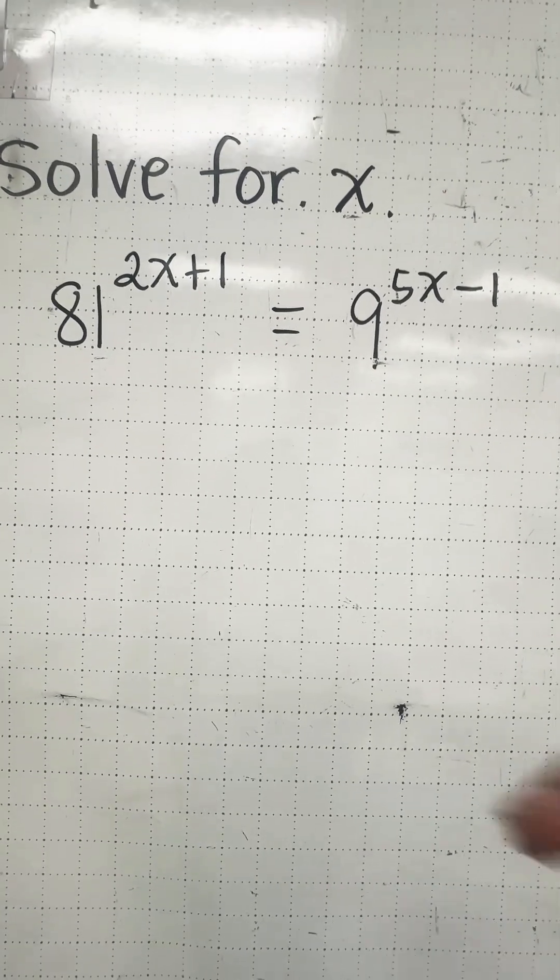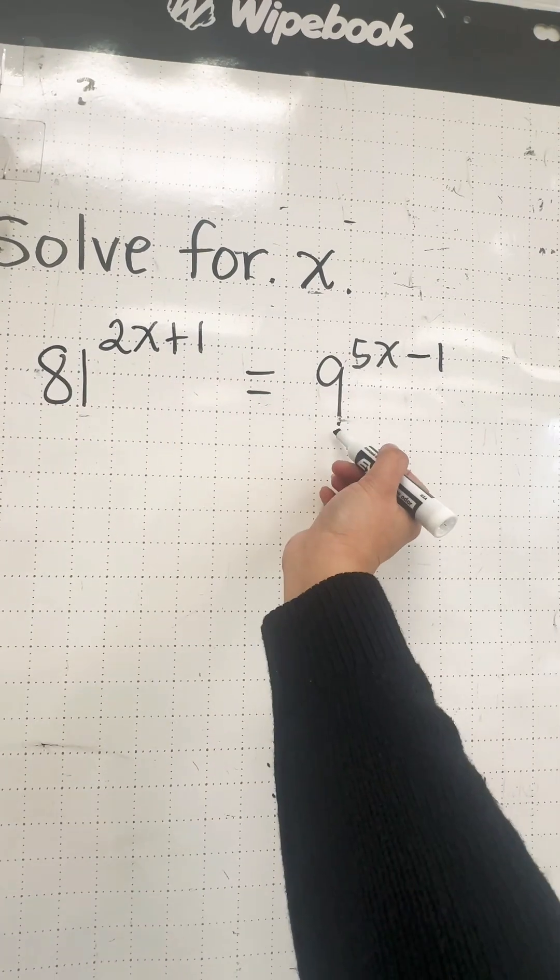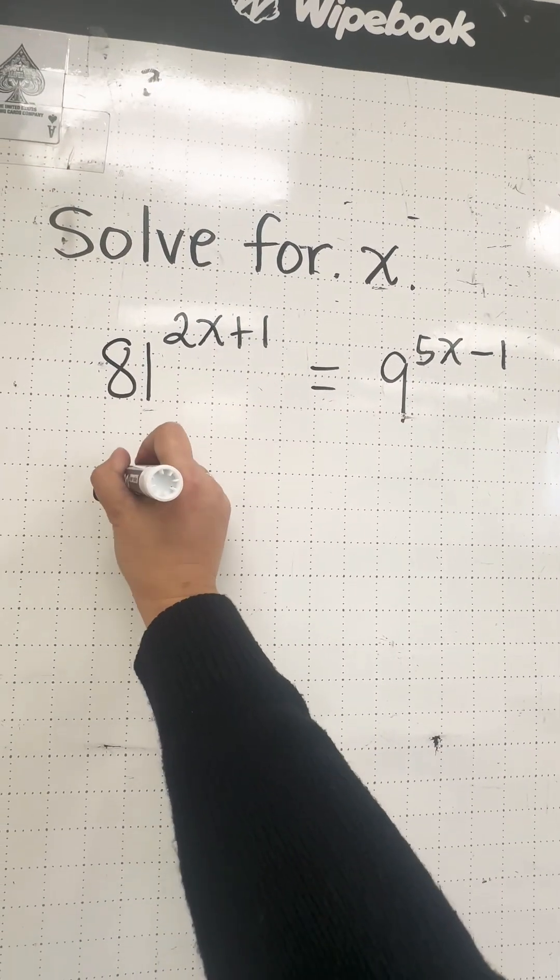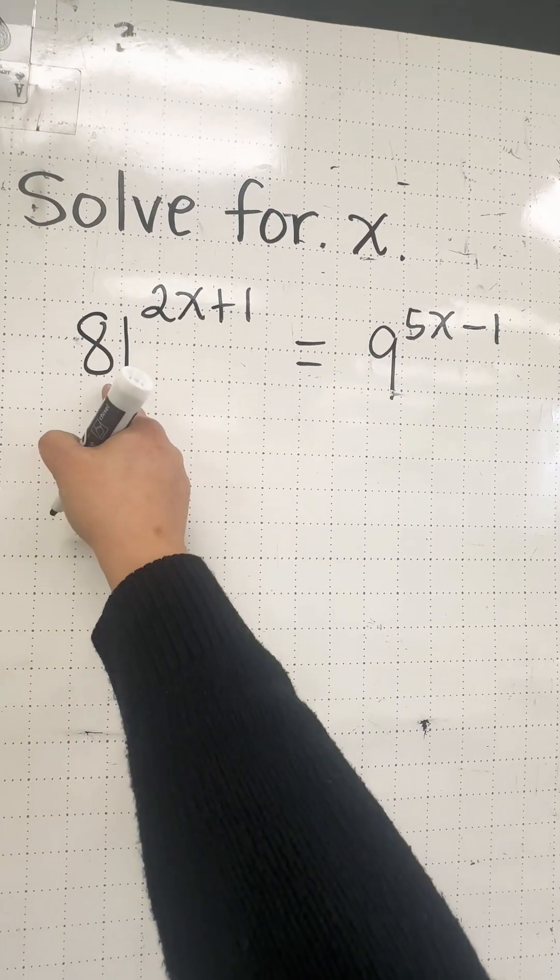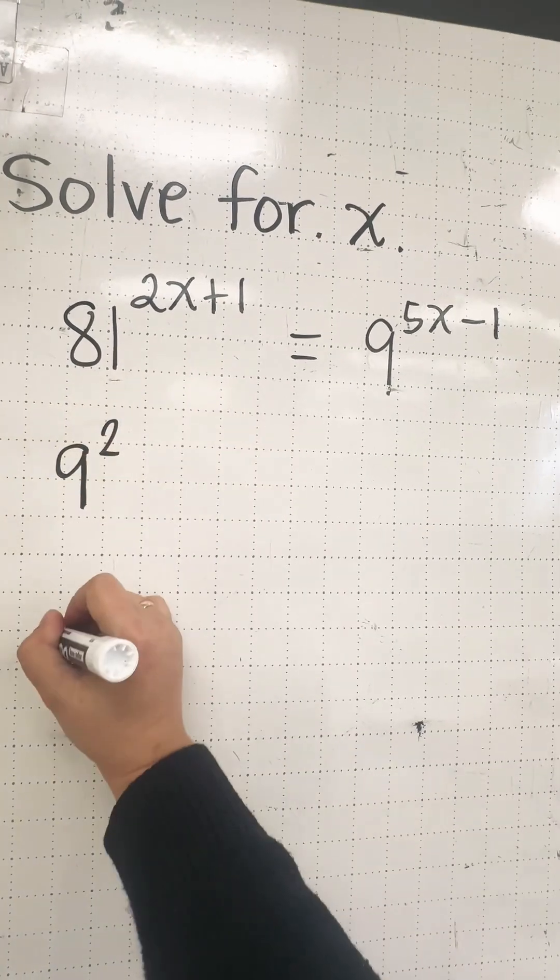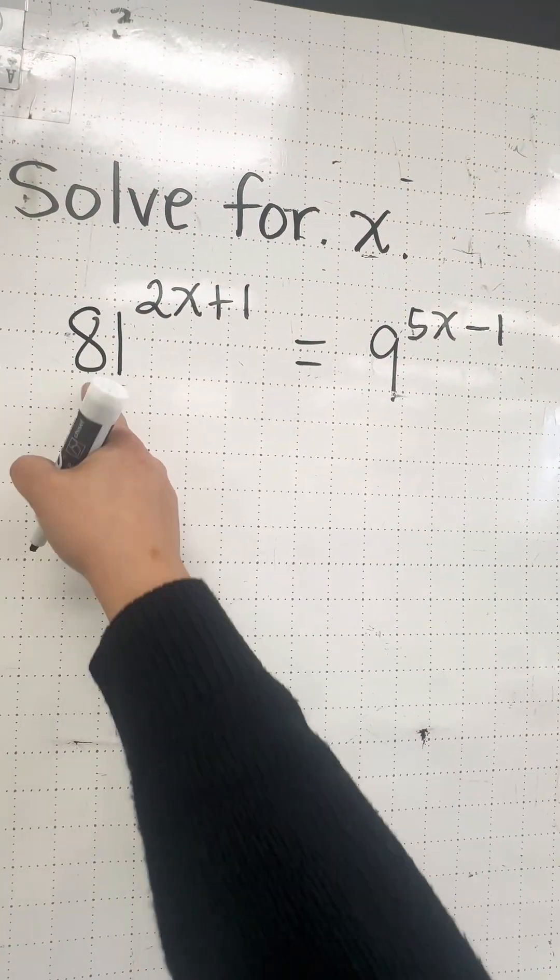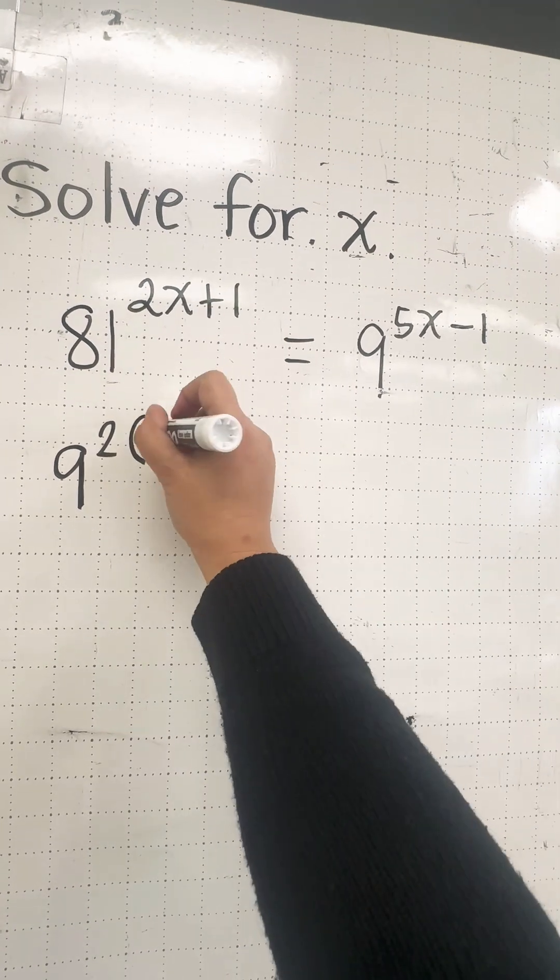Let us rewrite 81 as a power with base 9. How many times do you multiply 9 by itself to get 81? That is 2 times, because 9 squared is 81. Then you multiply the 2x plus 1 to the exponent 2.